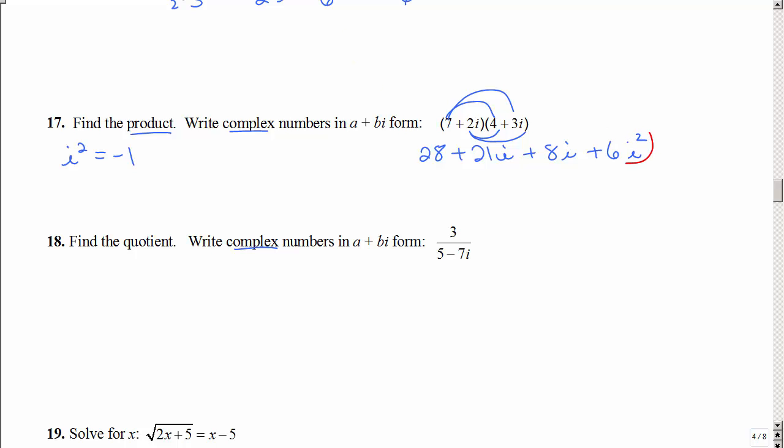And this is where you have to know that i squared is negative 1. These are like terms. So I'm going to keep the 28, I'm going to put those together, and then I have to know that that's 6 times negative 1, which is negative 6. So now those are like terms. So negative 6 and 28 is 22.